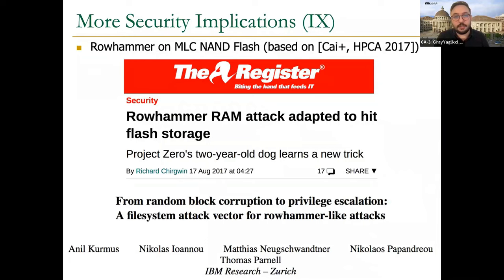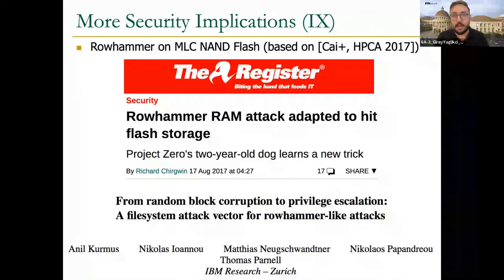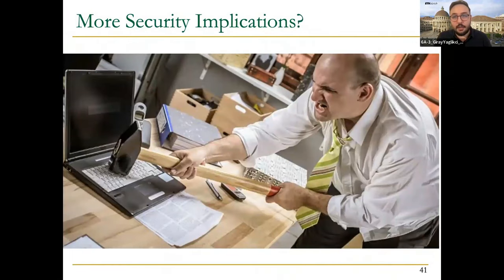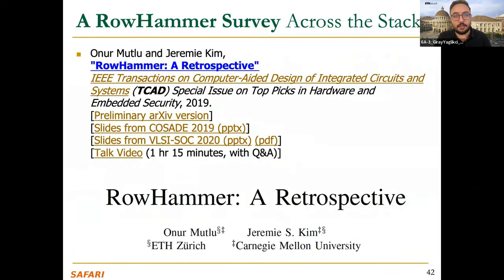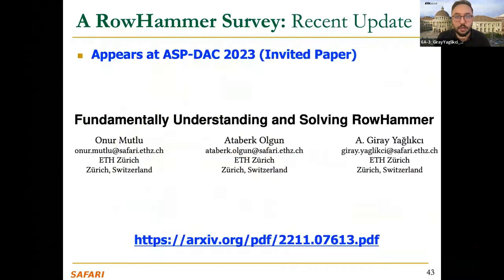Rowhammer is not only a DRAM problem — there is strong evidence in the literature showing that other memory technologies can be affected by read disturbance errors, and we expect more security implications to come. We published a retrospective paper in 2019 covering most of these works, and the ASPLOS paper includes updated advancements in the literature.